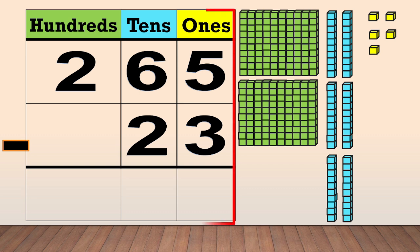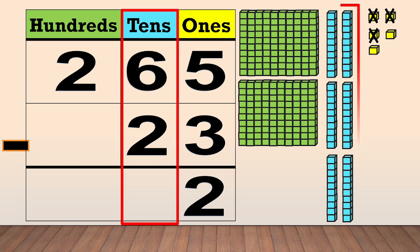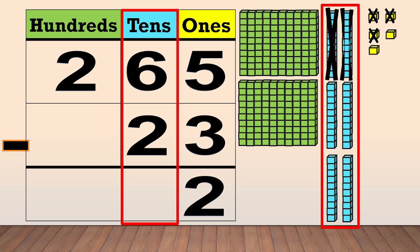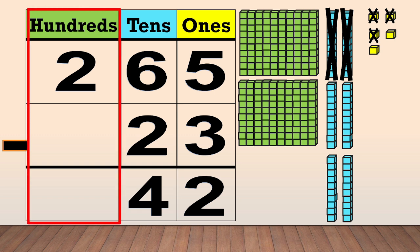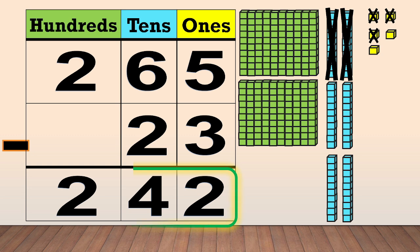Next, we subtract the ones. Five ones minus three ones equals two. Then, we subtract the tens. Six tens minus two tens equals four. Now, we subtract the hundreds. We have two hundreds, but there is no number in the hundreds column of the subtrahend. That means there is nothing to subtract, so we bring down the two hundreds. So, 265 minus 23 equals 242.